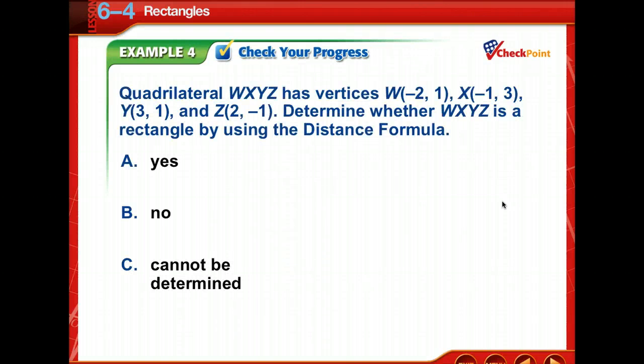Time to check your progress. Remember the distance formula—if you don't, go back and look at it in your notes. Pause and then come back and check your answer. Of course it is. I got that WX and ZY both have the measure of square root of 5, and XY and YZ both have the square root of 20. Yes, those are congruent.